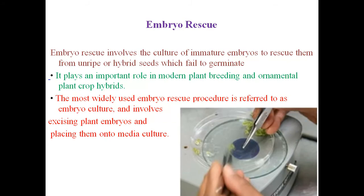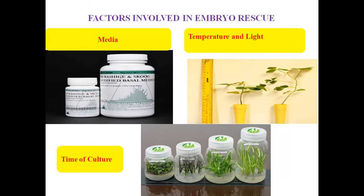Embryo rescue involves the culture of immature embryos to rescue them from unripe or hybrid seeds which fail to germinate. It plays an important role in modern plant breeding and ornamental plant crop hybrids. The most widely used embryo rescue procedure is embryo culture, which involves excising the plant embryo and placing it onto culture media. In short, embryo rescue is the culture of immature embryos that have failed to germinate, and it is an important method for plant breeding and crop hybrids.